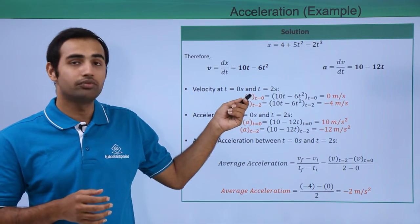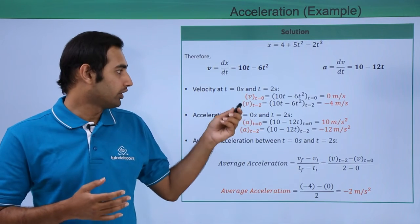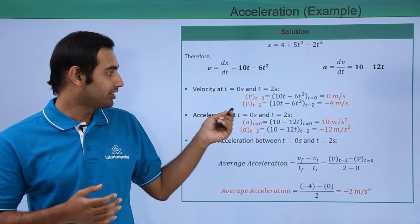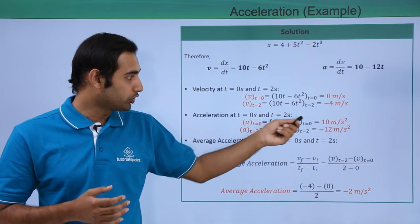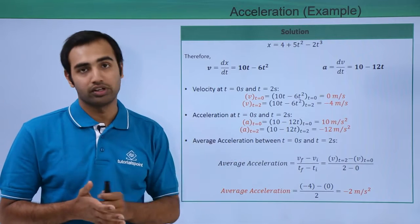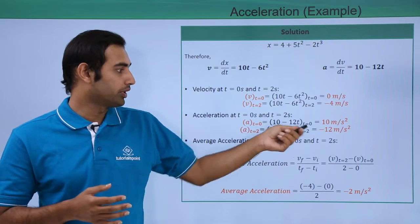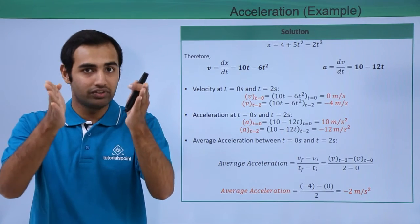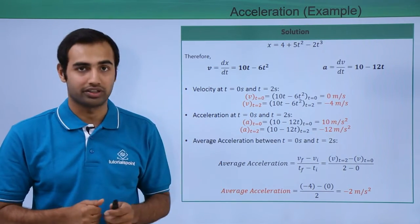Velocity at t equal to 0 seconds comes out to be simply 0 meters per second. Velocity at t equal to 2 comes out to be minus 4 meters per second. Acceleration at t equal to 0 comes out to be 10 meters per second squared, and at t equal to 2 it comes out to be minus 12 meters per second squared. Now average acceleration between t equal to 0 and t equal to 2 seconds can be given as change in velocity between these two time instances upon total time taken, which is clearly 2 seconds.